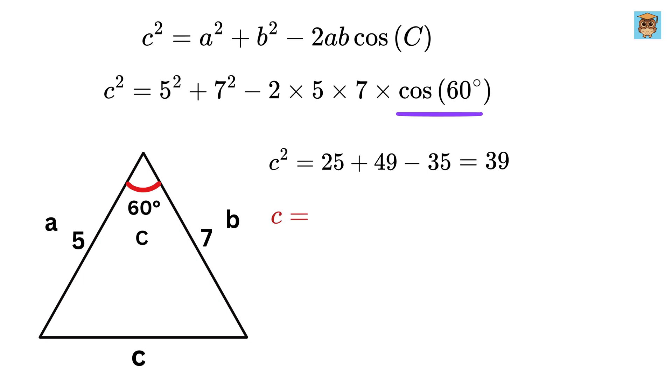Therefore, C squared will be 25 plus 49 minus 35, or 39. So C equals the square root of 39, which is approximately 6.245, and that's it.